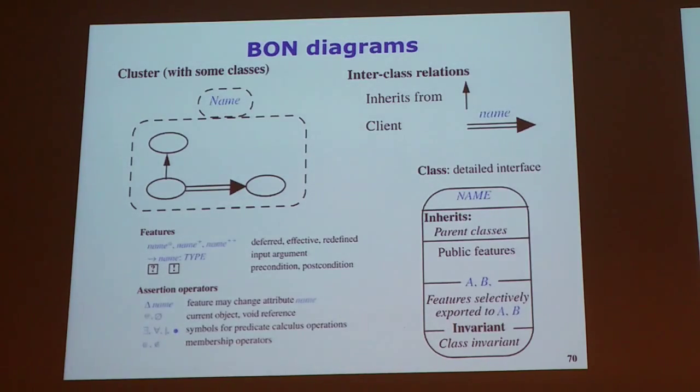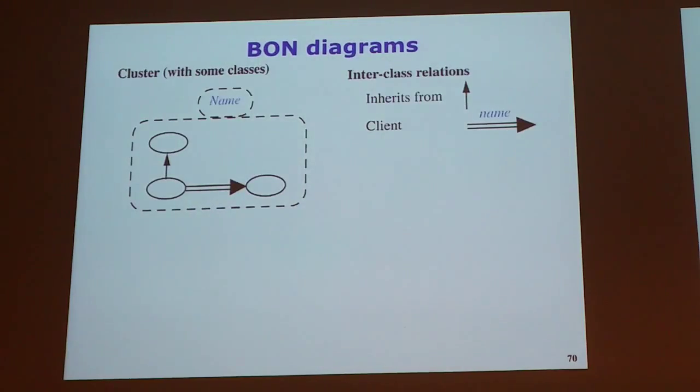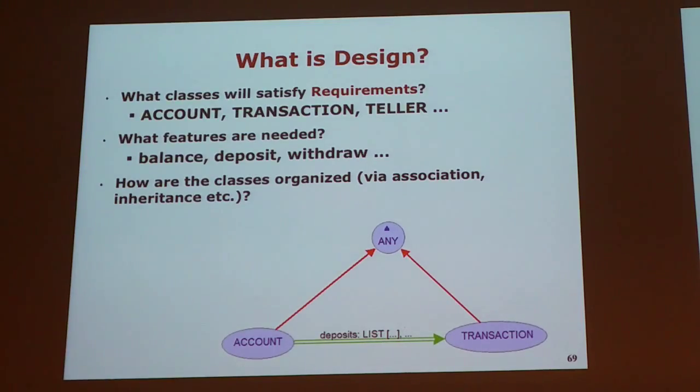Just to be sure, the double arrow points towards the client? Yes. Yes, exactly. Let's say, in this case here, yes. So, this is the client, and this is the supplier. Yes. Then, you can think of this like a uses relationship. So, this account uses the service of transaction.